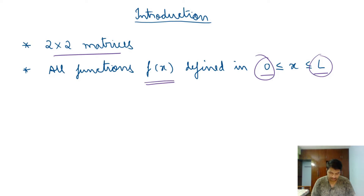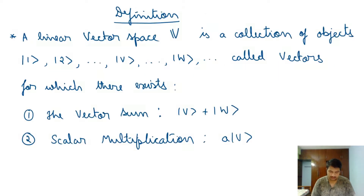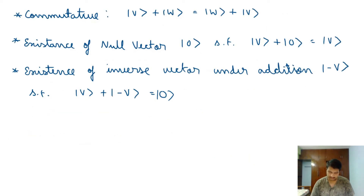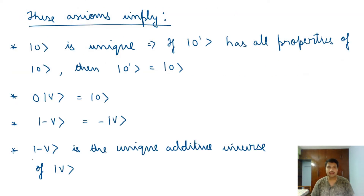Before we continue, here is the definition of a vector space — if you want to recall, just pause the video and go through these slides. These are the features of a vector space, their continuation, and the results implied by those features. This is where we stopped on Day 2.